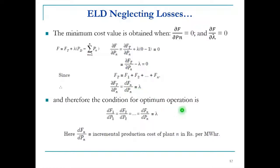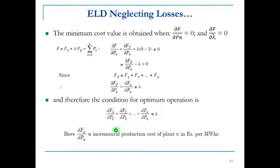The condition for optimum operation is: dFn/dPn = λ for all n, which means dF1/dP1 = dF2/dP2 = ... = dFn/dPn = λ. This can also be written as IC1 = IC2 = ... = ICn = λ, where lambda is the system incremental cost and was the Lagrangian multiplier.